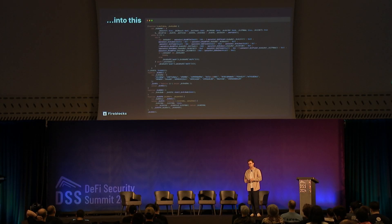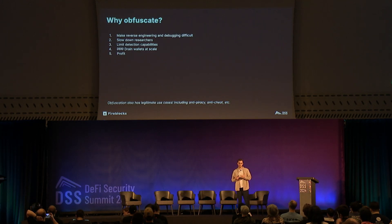When you want to study the code, you see that obfuscation is holding you back, and this is what made us jump into this research. Obfuscation essentially is turning a piece of code into something that's really complex to understand, to read, and to get to the bottom line of. From a malware developer's perspective, you want resilience for your malware — make reverse engineering hard, slow down researchers, limit detection capabilities, drain wallets at scale, and make profit. There are some legitimate use cases for obfuscation, like protecting your IP rights, but in this case it's really bad and we want to tackle it.